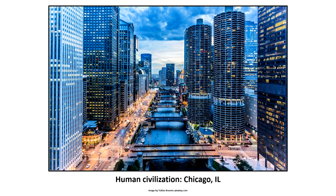What I want to start with is a familiar image to represent human civilization — the city of Chicago. If you look, you can see the buildings, bridges, and streets. If you look closely, you can see little tiny people, to give you a sense of the size of this part of the city — the scale of human civilization and the scale of human accomplishment.